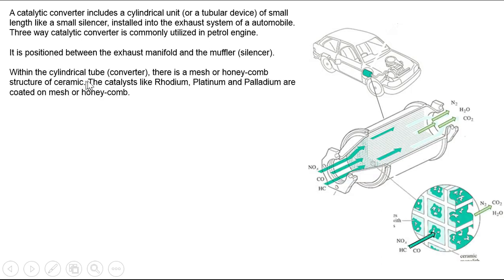Within the cylindrical tube, as you can see, there is a mesh or honeycomb structure which is made of ceramic. The catalysts like rhodium, platinum and palladium are coated on this mesh or honeycomb.